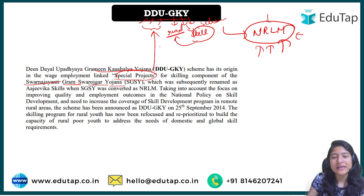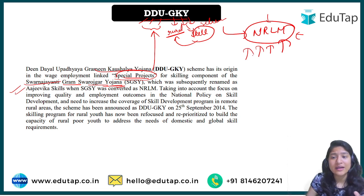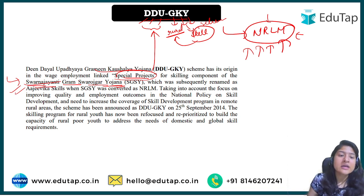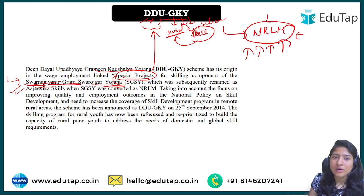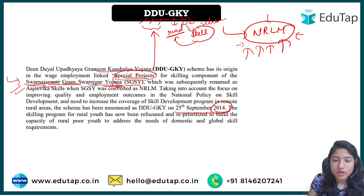This scheme has existed since 2004 under the special projects of SGSY. SGSY was later renamed to NRLM — this is a previous year exam question. The special project component was also revamped and then on 25th September 2014 it was renamed and relaunched as Deen Dayal Upadhyaya Grameen Kaushal Yojana.